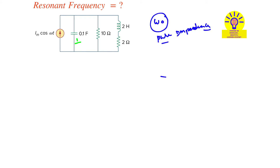For the capacitor branch, the impedance is 1/(sC) where C = 0.1, so it is 1/(0.1s). For the resistor branch, the impedance is R = 10. For the third branch, there are two impedances: sL = 2s and R = 2, giving a total branch impedance of 2 + 2s.